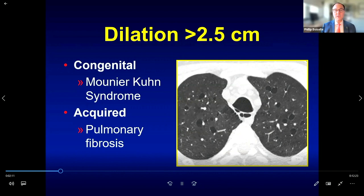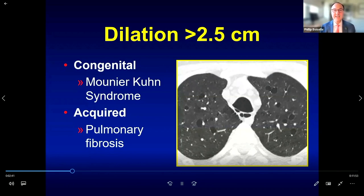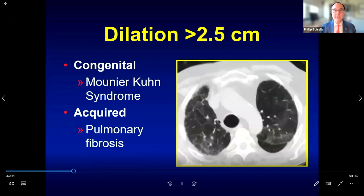When evaluating the trachea, look at its shape, its size — whether dilated or narrowed — and any endoluminal abnormalities. Regarding size, the tracheal lumen should not measure more than 2.5 centimeters in diameter in an adult. Anything greater defines tracheomegaly, which can be congenital as in the rare Mounier-Kühn syndrome, or more commonly acquired in patients with chronic lung disease such as interstitial lung abnormality.